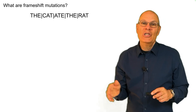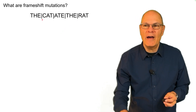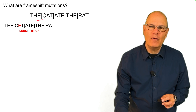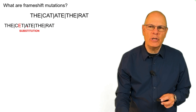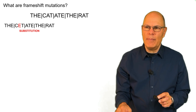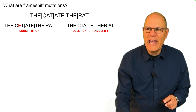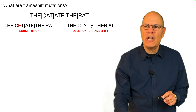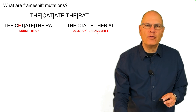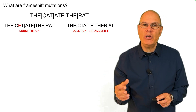What are frameshift mutations? To review this concept, consider a sentence composed of three-letter words with no spaces but with dividers. If we do a substitution of E for A, most of the words still make sense. But if we delete one of the letters, we've significantly changed the meaning. That is called a frameshift mutation because codons are read in groups of three — if you delete or insert a nucleotide, you change the reading frame.